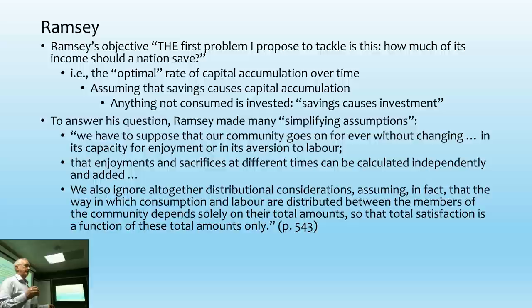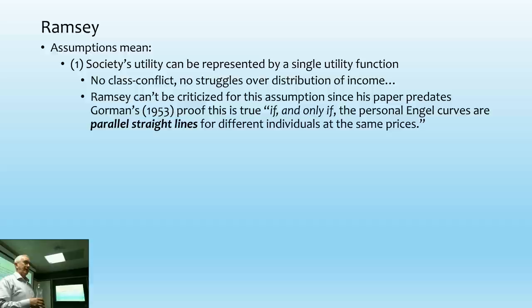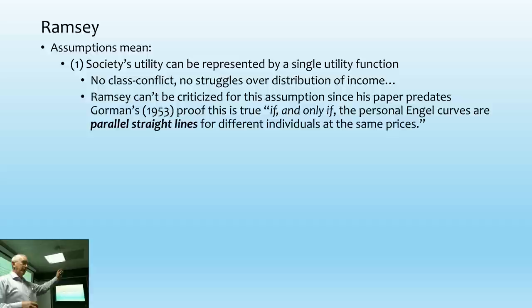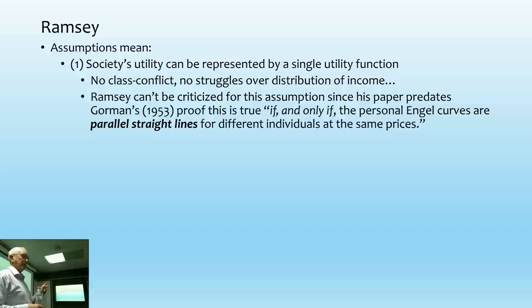Gorman's conclusion was that you can extrapolate from the individual consumer to the market level if and only if — meaning it's a necessary condition, not sufficient — Engel curves are parallel straight lines for different individuals at the same prices. What does that mean? It means if you took money from one person and gave it to another, exactly the same things would be bought. You're assuming income distribution changes don't alter consumption patterns.